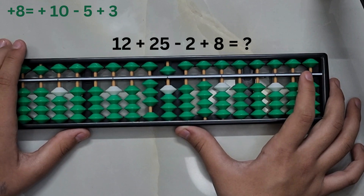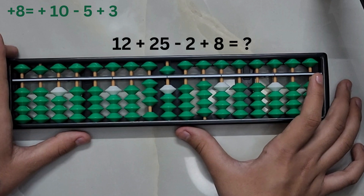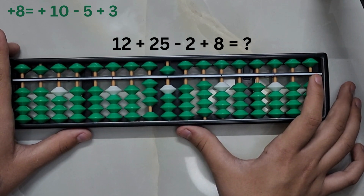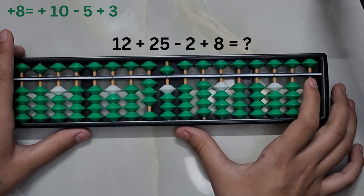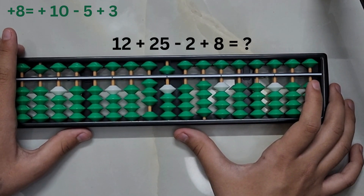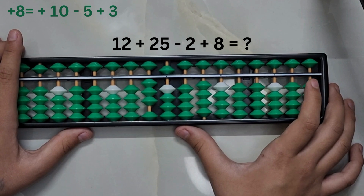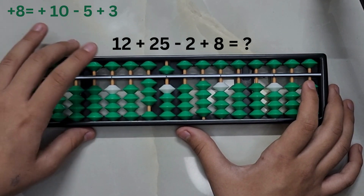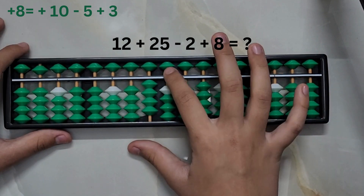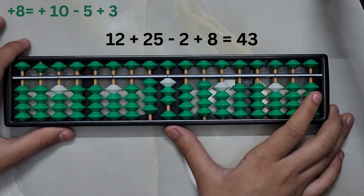The big friend formula for adding 8 is plus 10 minus 2 — we cannot subtract 2 beads because we do not have 2 beads in the lower deck. We cannot choose the small friend formula since the number we want to add is greater than 5. So we will take help from the combination formula, which is plus 10 minus 5 plus 3. Answer is 43.